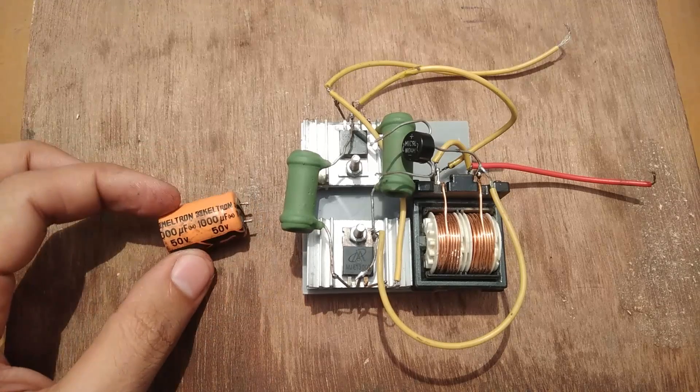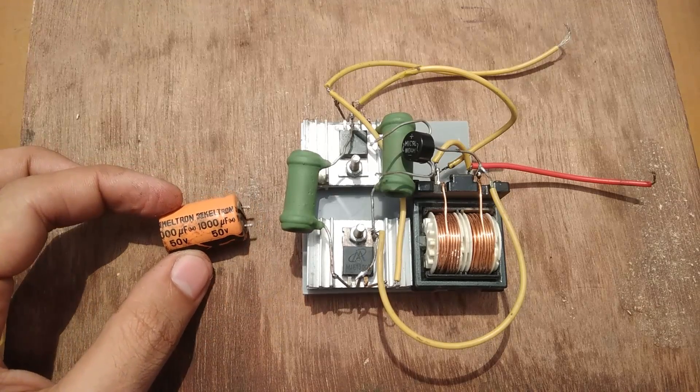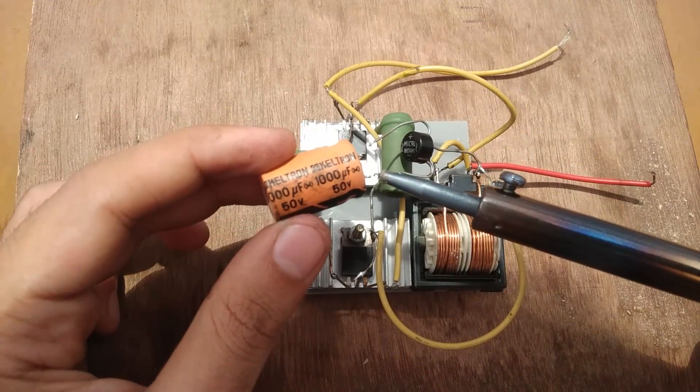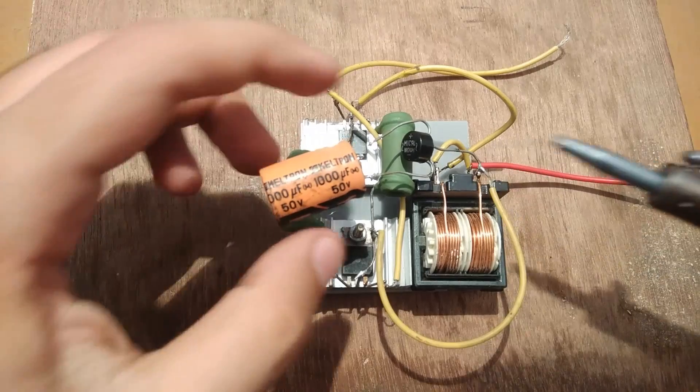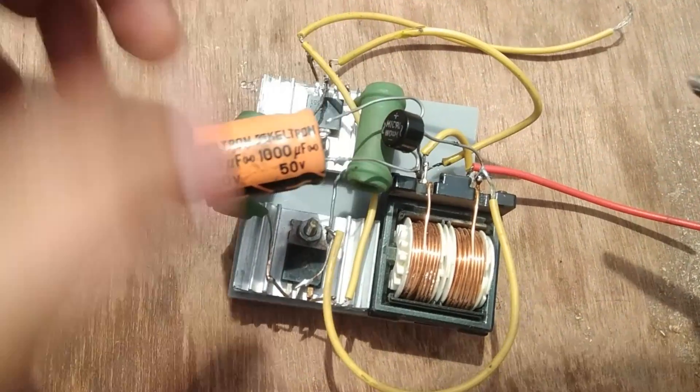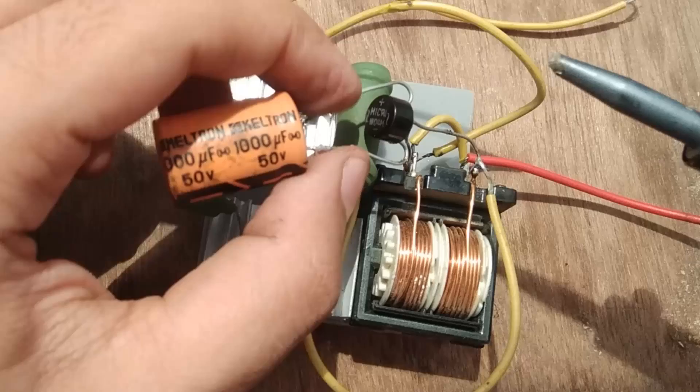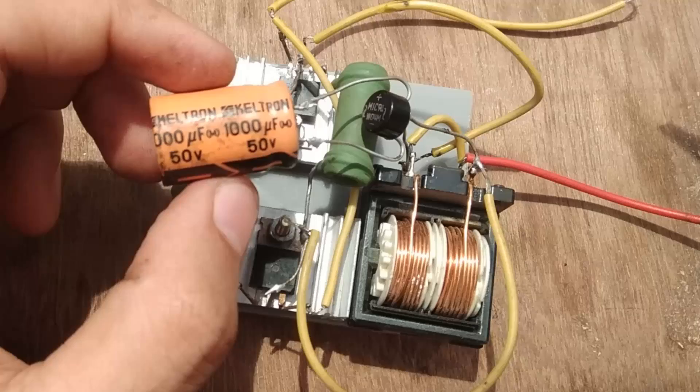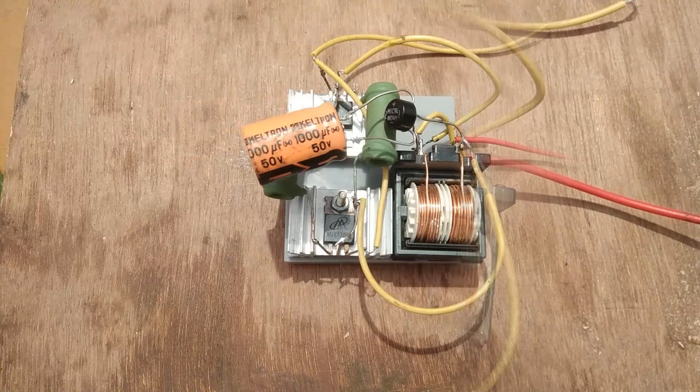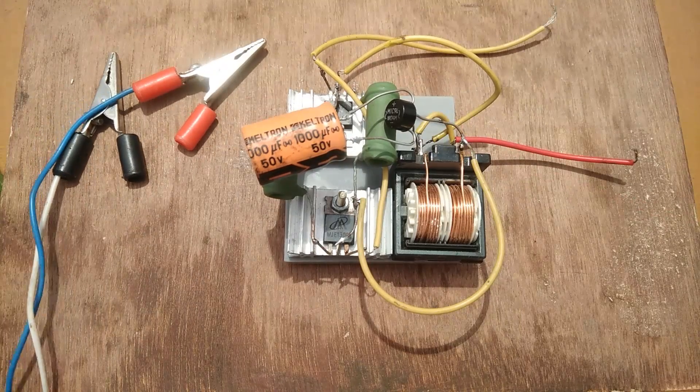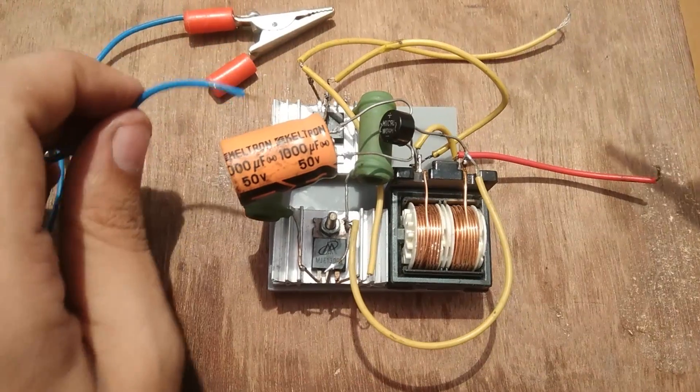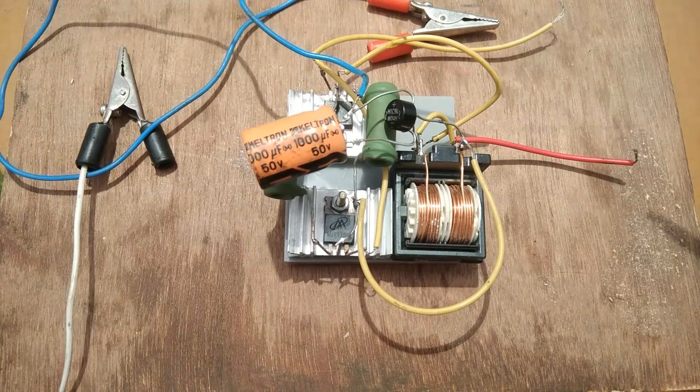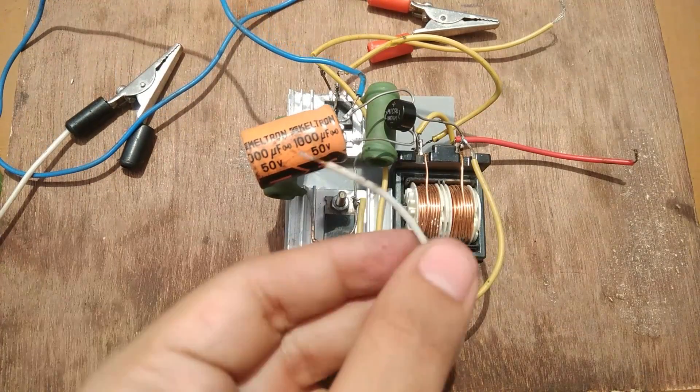This is a 50V 1000uF capacitor that I am going to connect to the output terminals of the rectifier to enhance the output voltage of the circuit. Also, DC capacitors have polarity so they have to be connected accordingly. The red crocodile clip is for the positive terminal and the black crocodile clip is for the negative terminal.